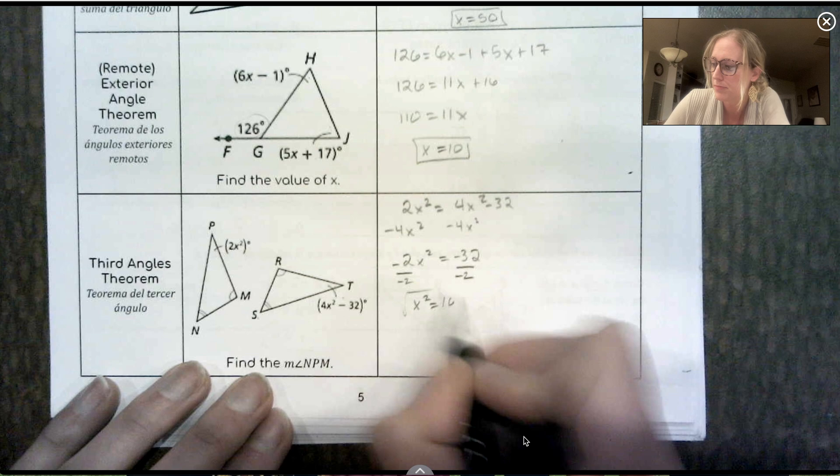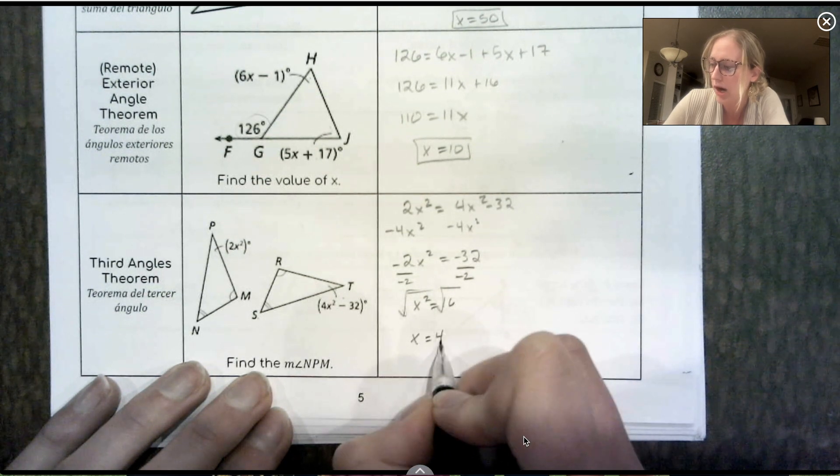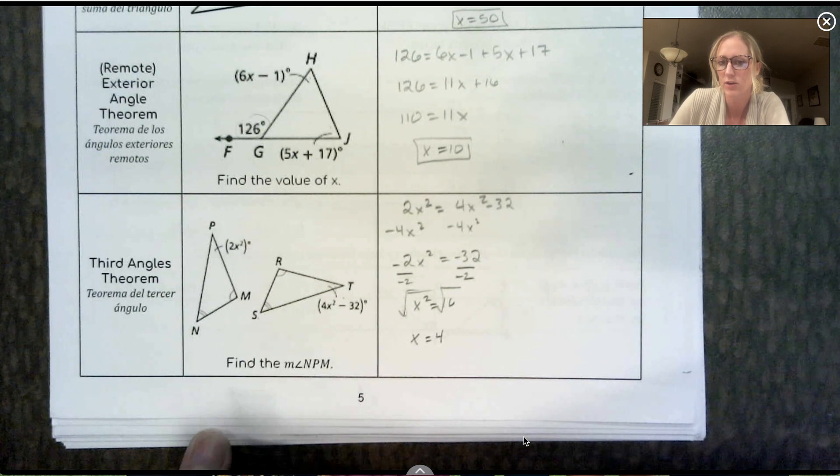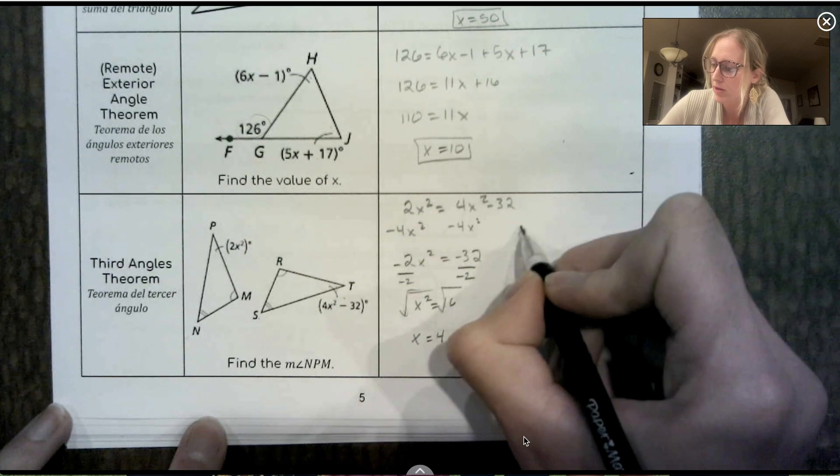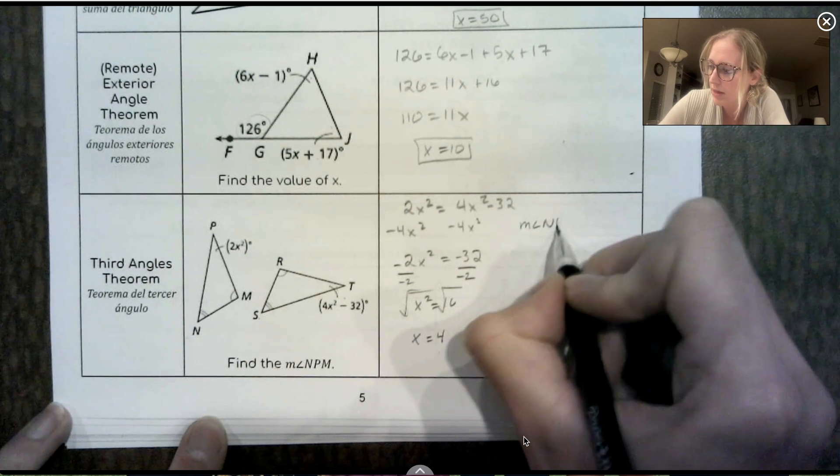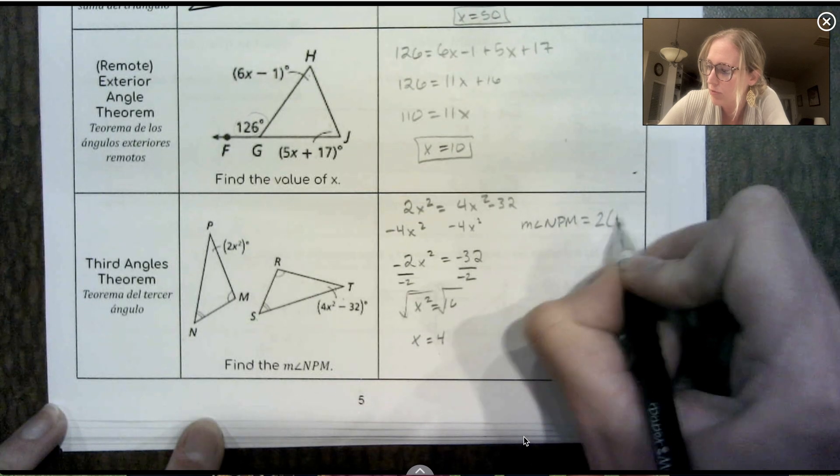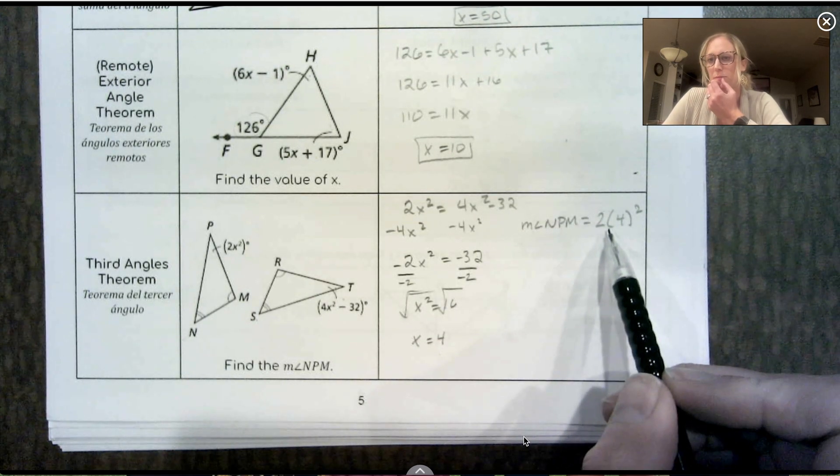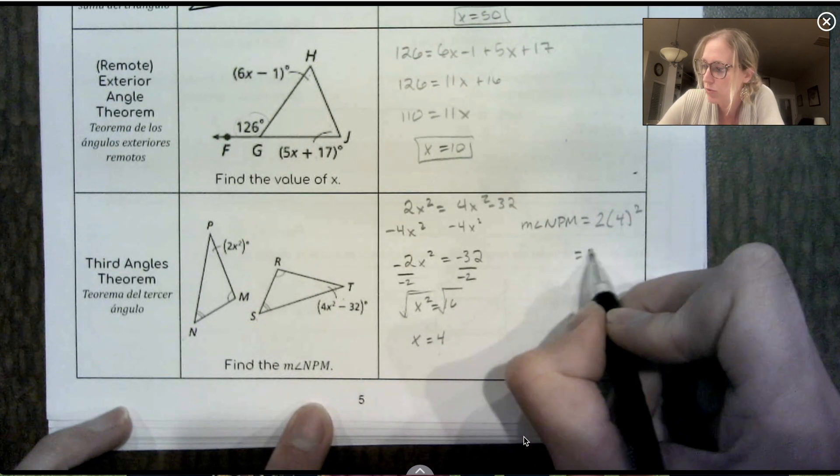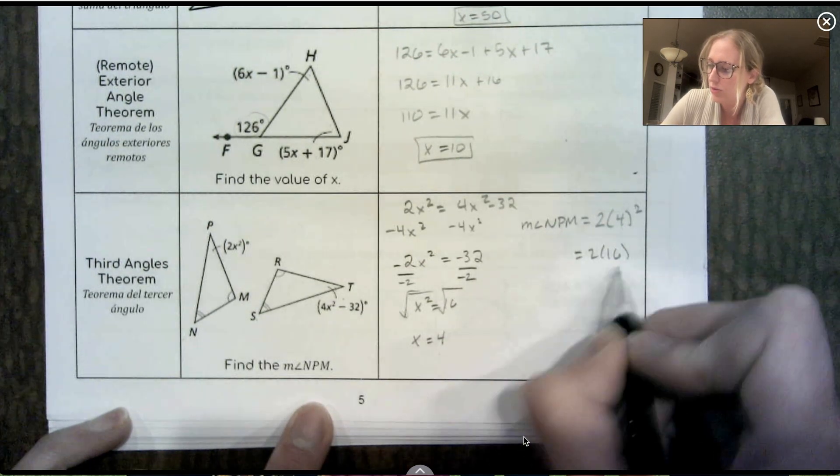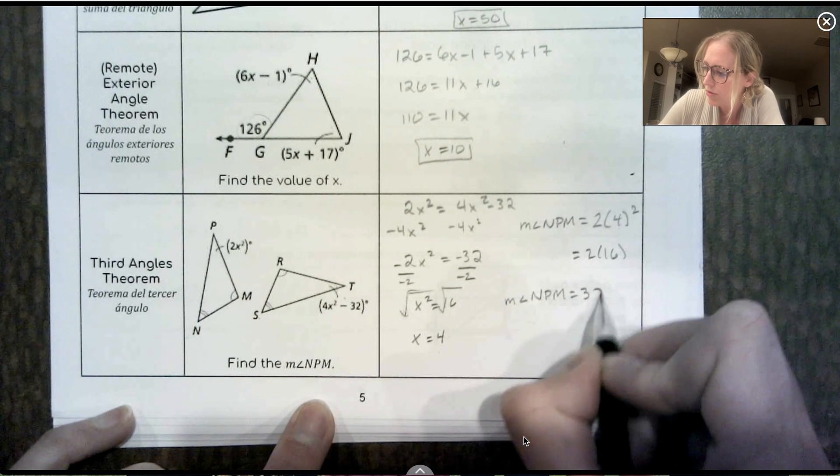Now when I take the square root, we get x equals 4. And in this one, we were asked to find angle NPM. So NPM was this one. So we are going to plug 4 back in. So the measure of angle NPM equals 2 times 4 squared. Really important we follow order of operations. We're going to do 4 squared first. So we get 2 times 16, and 2 times 16 is 32. So the measure of angle NPM is 32 degrees.